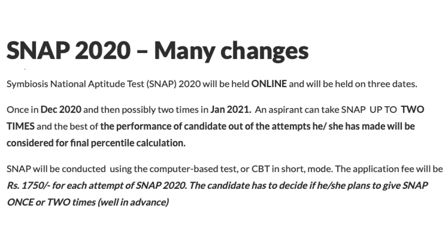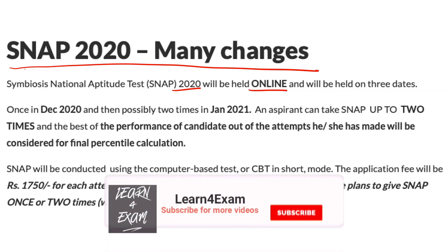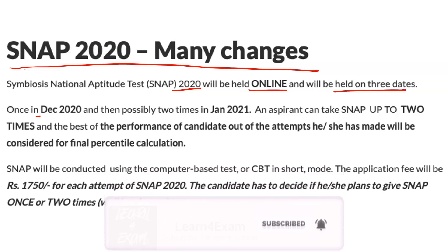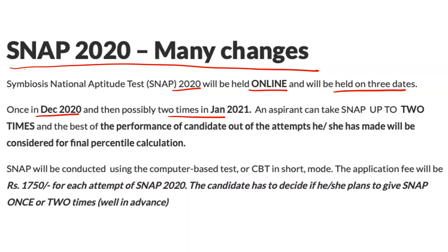Now regarding SNAP changes: SNAP 2020 will be online and will be held on three dates. The exact dates haven't been announced yet, but it will be held once in December and possibly two times in January 2021. One aspirant can attempt SNAP up to two times — you can give it twice, not three times.